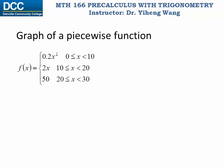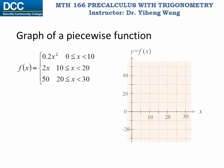To graph a piecewise function like this one, which is described by three different equations, we simply need to graph each equation according to its specified x interval. So we start with graphing the first equation 0.2x squared, and we graph it for the interval from 0 to 10.